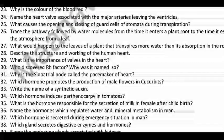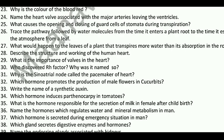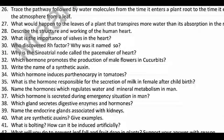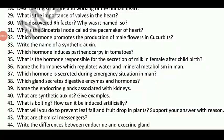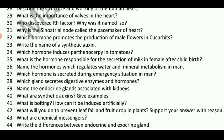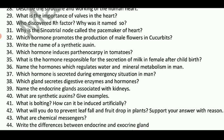Describe the structure and working of the human heart. What is the importance of valves in the heart? Who discovered the hereditary factors? Why was this named? Which hormones promote the production of male flowers in cucurbits? Which hormones induce parthenocarpic tomatoes? Plant hormones include auxin, gibberellin, and cytokinin — these have effects on parthenocarpic fruit and apical dominance.